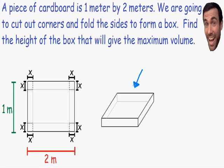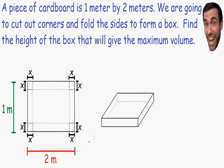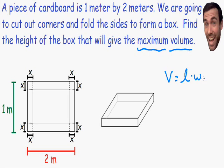Let's get started by looking at all of the steps for performing any optimization problem. Step number 1 says to find the equation to maximize or minimize. We need to find the maximum volume, so the volume of the box is what we're trying to maximize. The volume of a box equals length times width times height — this is the equation we are trying to maximize.